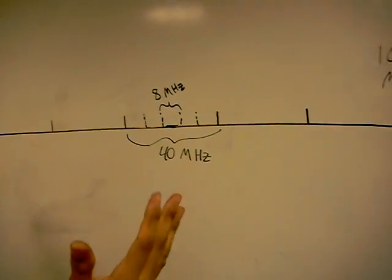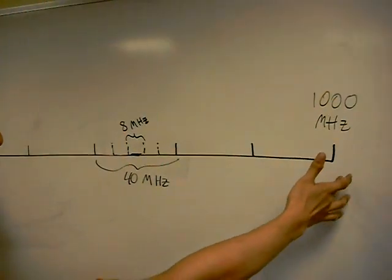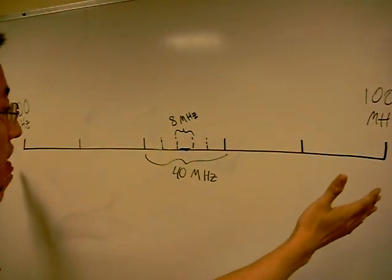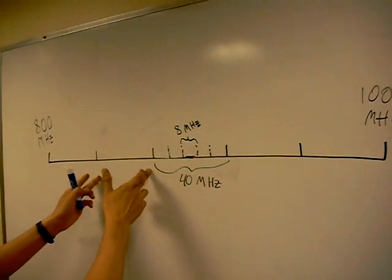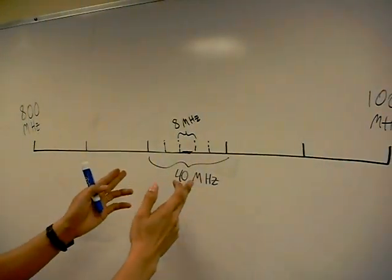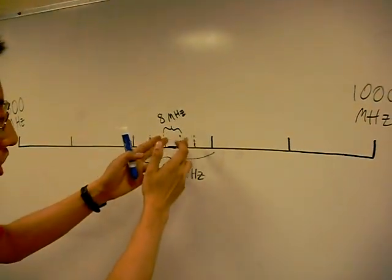So our USRP can signal process between 800 megahertz and 1000 megahertz. What we've done is we've broken up this frequency spectrum into 5 40 megahertz bands. Each 40 megahertz band we further subdivide into 5 8 megahertz channels.